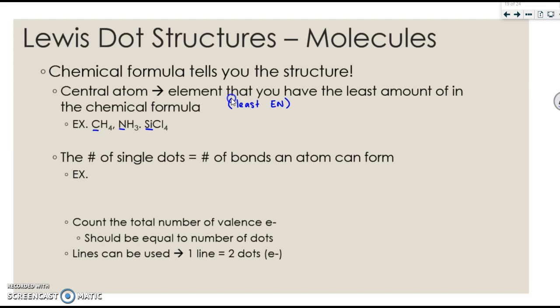The number of single dots on anything, but primarily on the central atom, tell you the number of bonds that atom can form.